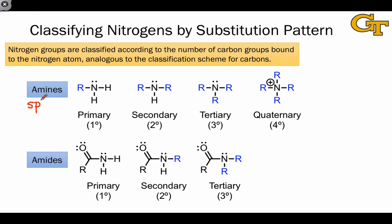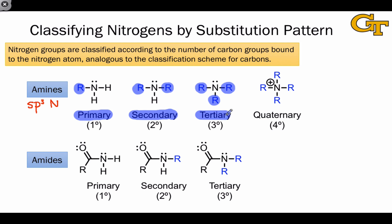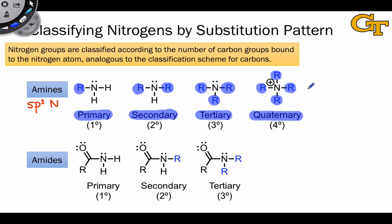Amines contain an SP3 hybridized nitrogen atom, and we can classify the nitrogens in amines using a similar system. Amines that bear one R group attached to the nitrogen atom are referred to as primary — they have two hydrogens bound to the nitrogen. Secondary amines contain two R groups bound to nitrogen and one hydrogen atom. Tertiary amines lack hydrogens bound to nitrogen and contain three R groups. Quaternary ammonium salts, which necessarily have a positive charge because nitrogen bears only four bonds formally, contain four carbon groups bound to the central nitrogen atom and are referred to as ammonium cations.